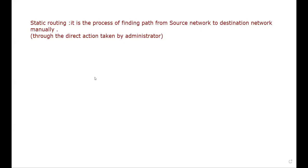Today's topic is static routing. In our last video we covered the theoretical part — what is static routing, what is dynamic routing, and what is routing. Today we are going to discuss static routing practically. Static routing is the process of finding a path from source to destination manually. All the things you have to enter manually. Static routing can be implemented in two ways.